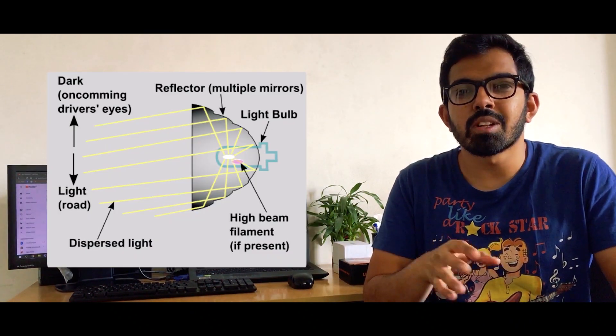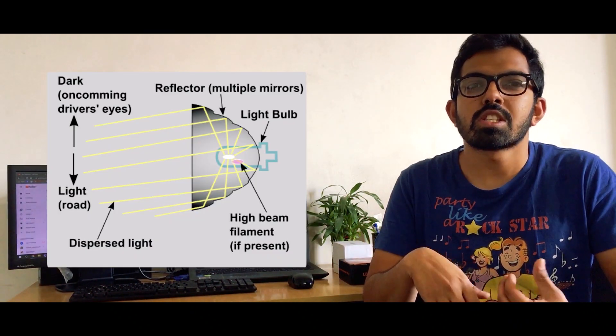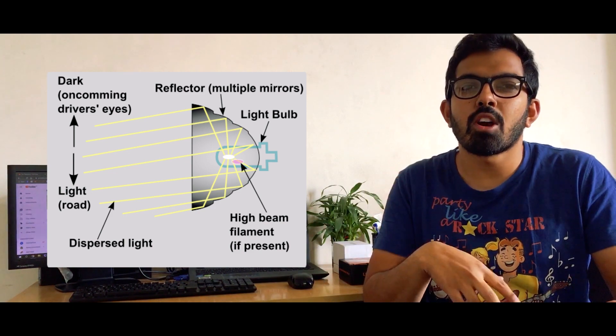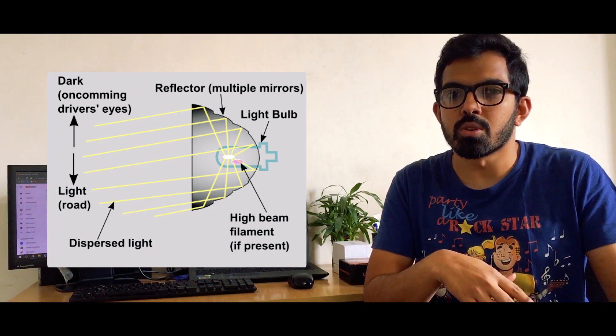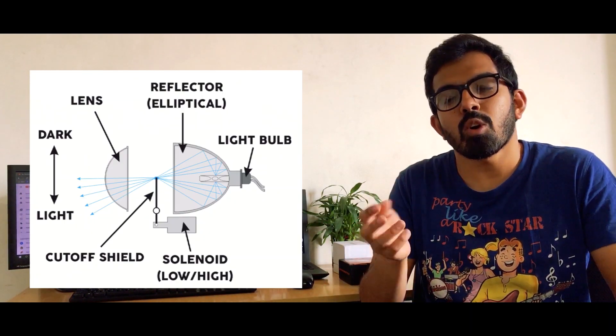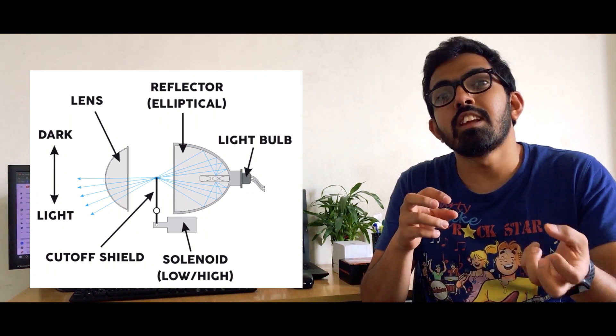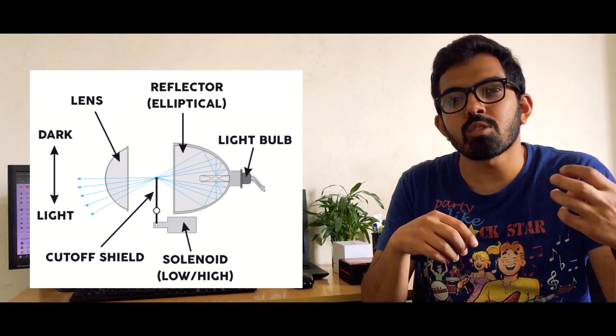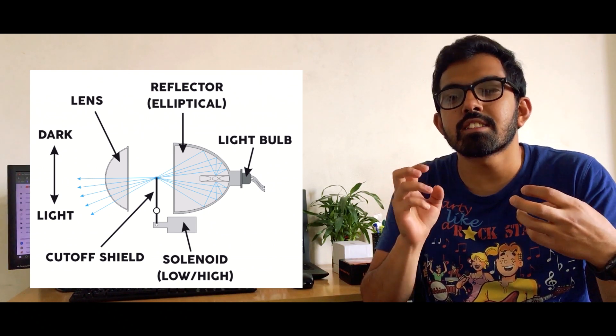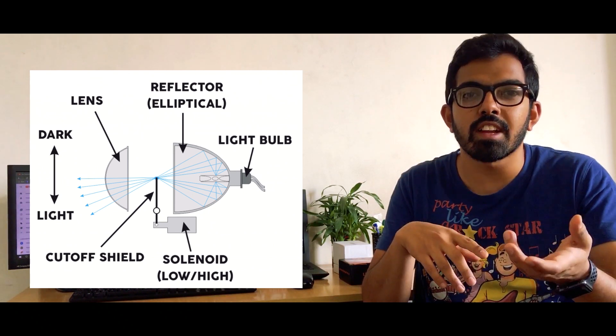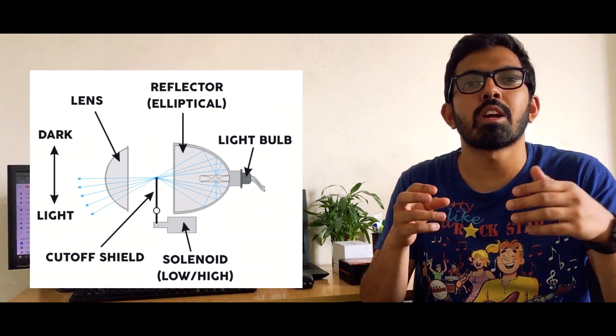Reflectors are fairly simple — they have a reflective mirror which helps to reflect the light from the headlamp onto the road. In projectors, you also get a reflector inside the lens. What you see on the outside is the lens, and behind that lens is a reflective mirror that reflects the light from the headlamp and projects it on the road. Now there are five types of headlamps available in the market.